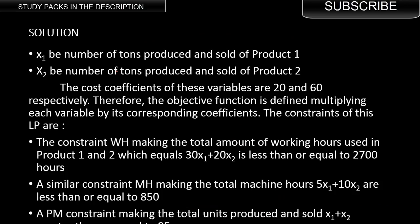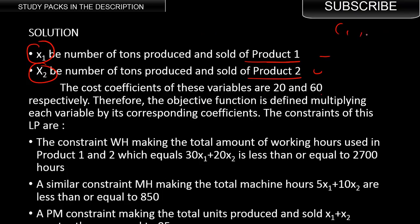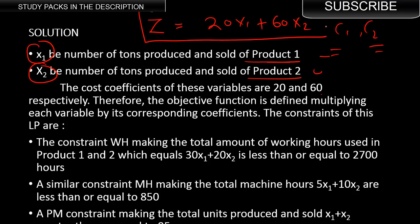Let's formulate it formally. x1 is the number of tons produced for product one, and x2 is the number of tons produced for product two. The cost coefficients of these variables are 20 and 60 — the profit per ton from product one is $20 million and from product two is $60 million. These are c1 and c2 from the definition.